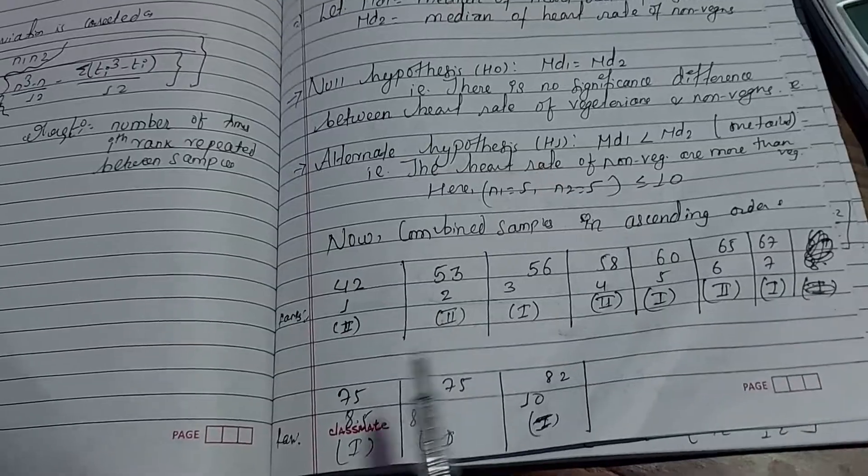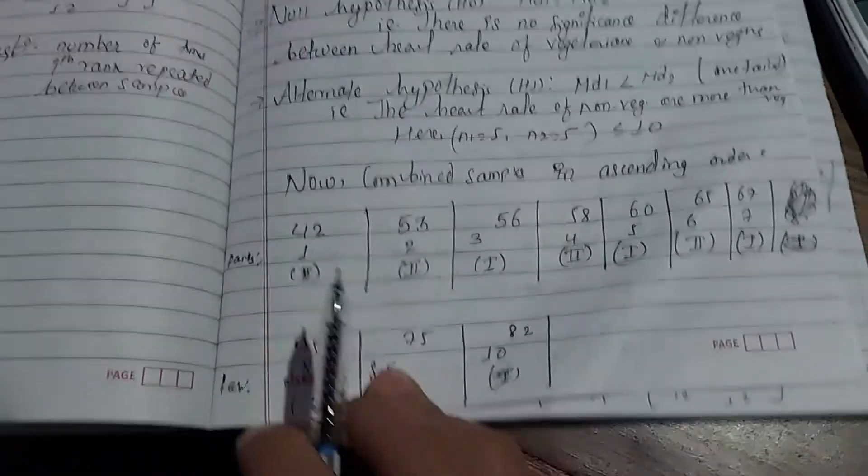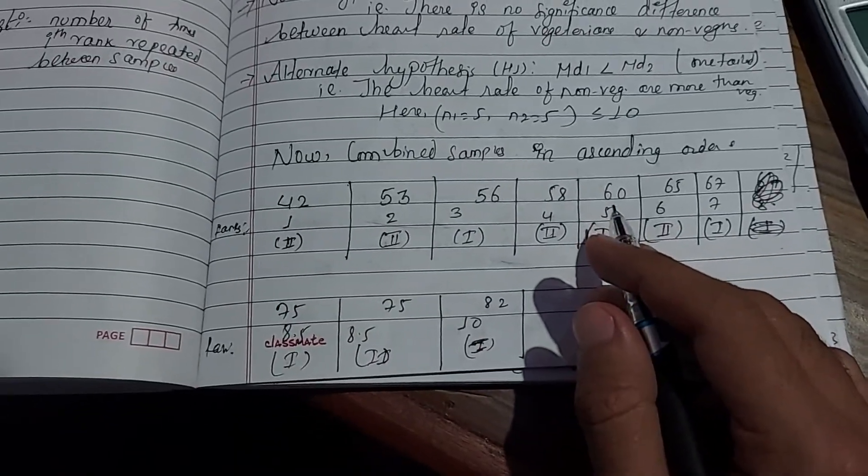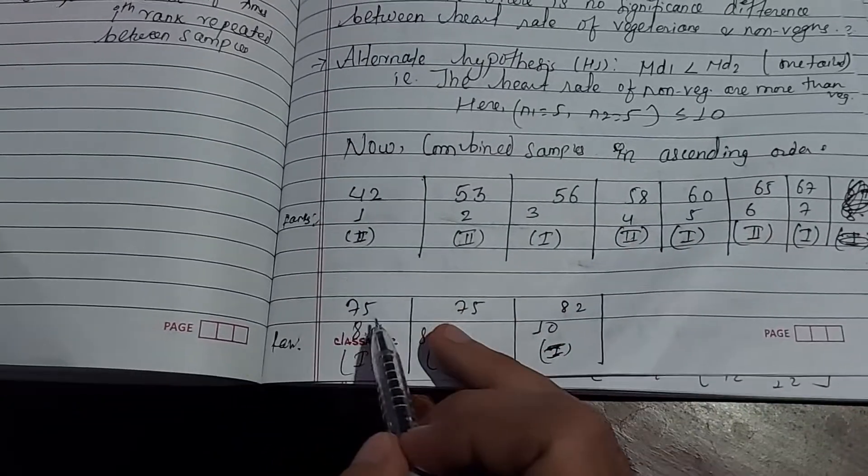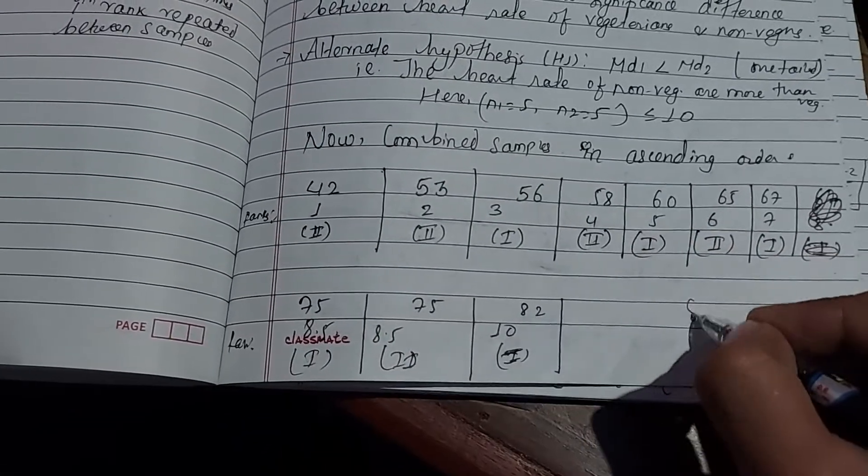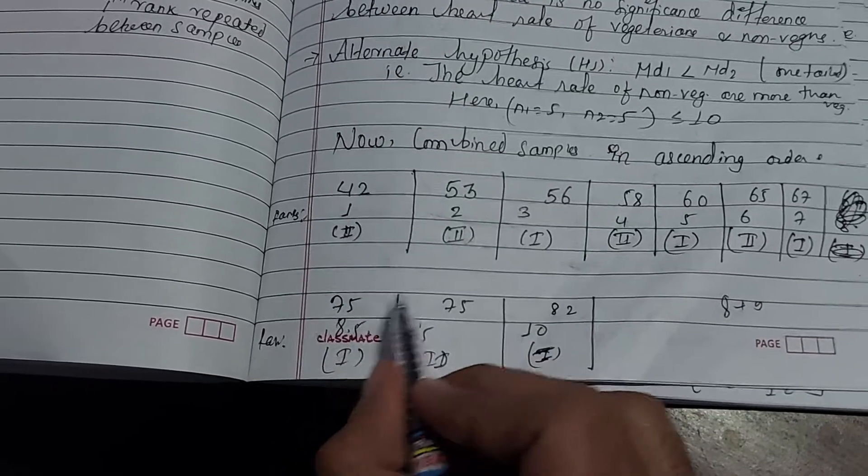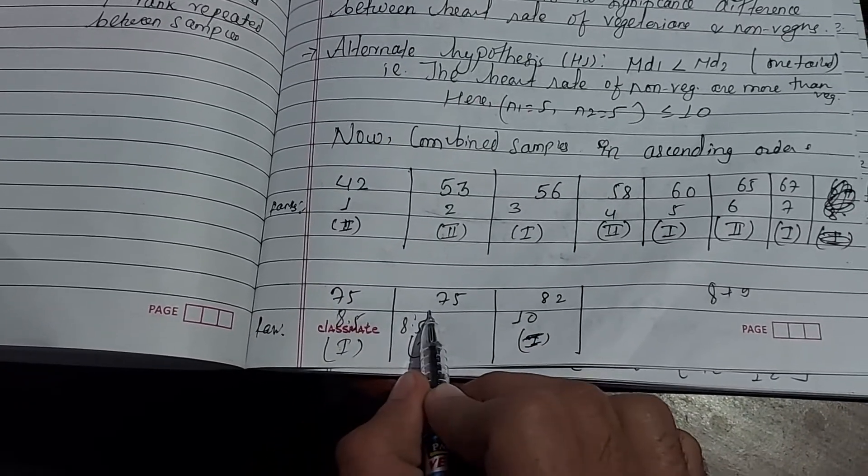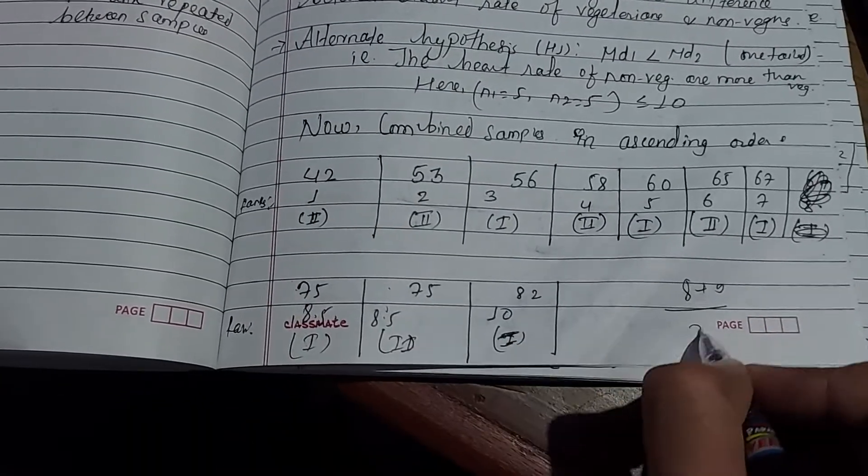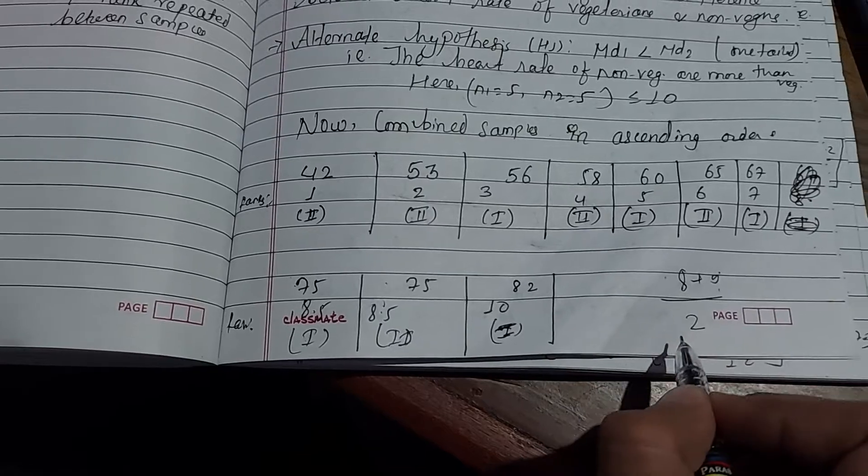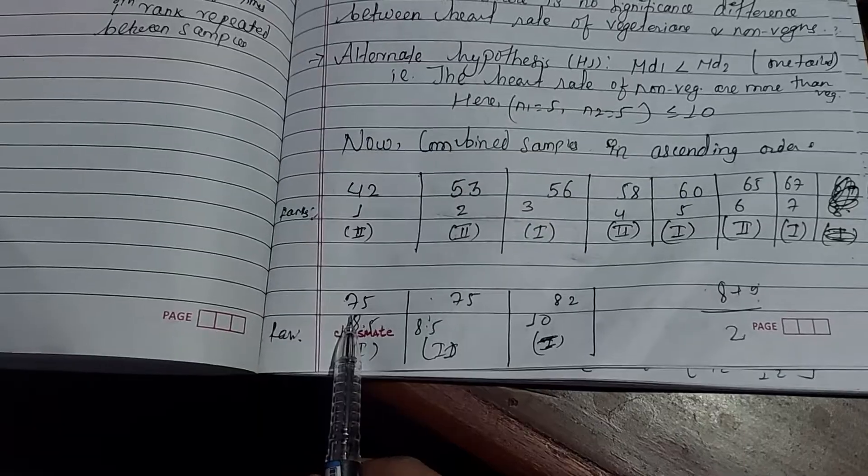When ranking, if there's repetition or tied values, we take the average of their ranks. For example, the value 82 appears twice at positions 8 and 9, so both get rank 8.5, which is (8+9)/2.